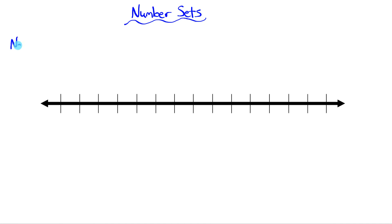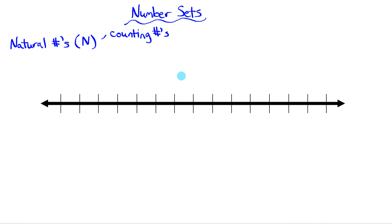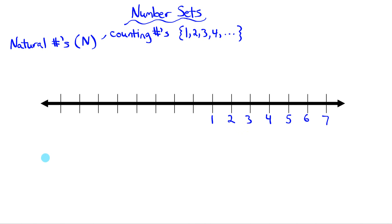Let's start by talking about the natural numbers. The symbol for natural numbers is an N, and natural numbers refer to one of two things — it's actually a little bit ambiguous. It could refer to the counting numbers, which are literally the numbers you count with: one, two, three, four, and so on. On this number line, I'm going to label some counting numbers.